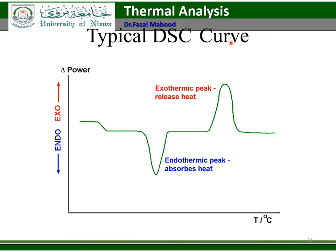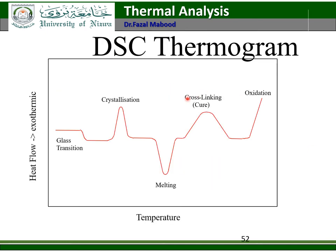A typical DSC curve has exothermic peaks (heat released) and endothermic peaks (heat absorbed). Features include the glass transition peak, crystallization peak, melting point peak, cross-linking curve, and oxidation peak.